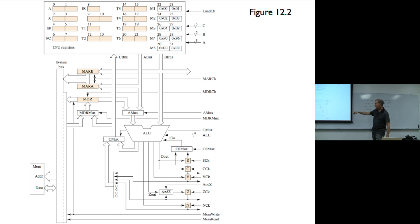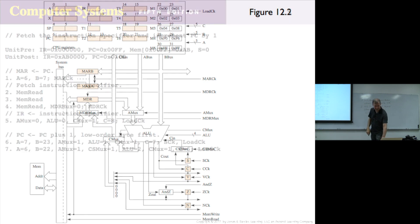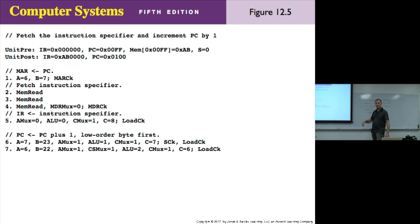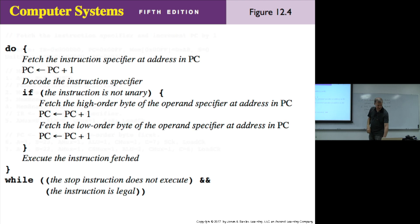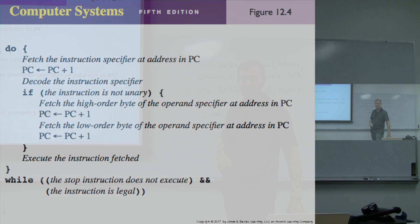ALU function 0 sends A straight through. Then CMUX equals 1, and C equals 8 to put it in the instruction specifier register location. LoadCK stores it. We've now completed fetching the instruction specifier and doing PC gets PC plus one from figure 12.4. Then we'd decode — if the instruction is not unary, we do more fetching.